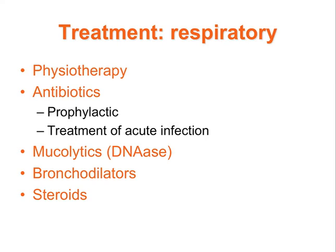Treatment of the respiratory side of cystic fibrosis involves physiotherapy to aid airway clearance of the thick mucus. Antibiotics — firstly prophylactic oral flucloxacillin at diagnosis and treatment of acute infection. Mucolytics such as DNase increase mucociliary clearance and increase lung function. Bronchodilators and steroids are sometimes of benefit if there is bronchial hyperactivity with reversible airway obstruction, present in 30% of cystic fibrosis patients.